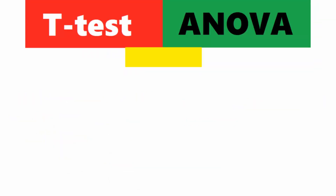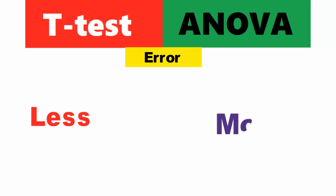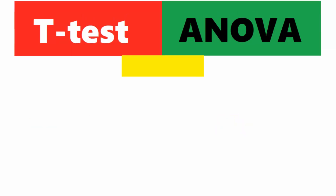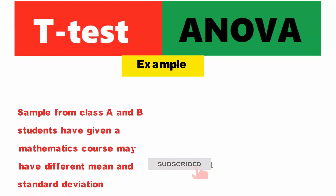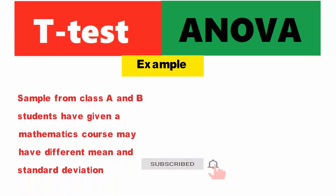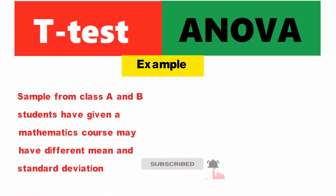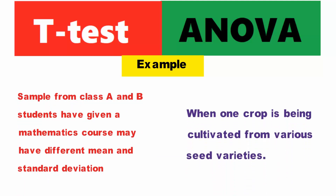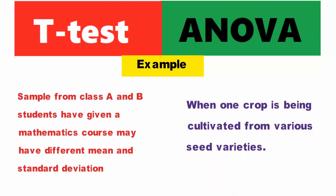5. Error: T-test is less likely to commit an error. ANOVA has more error risks. 6. Example: Samples from class A and B students who have been given a mathematics course may have different means and standard deviations, whereas ANOVA applies when one crop is being cultivated from various seed varieties.